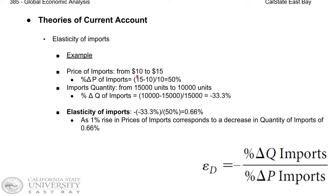As a result of this price increase, American consumers decided to buy fewer umbrellas. As a result, demand dropped from 15,000 to 10,000 units.